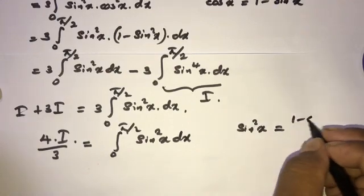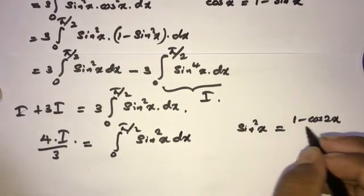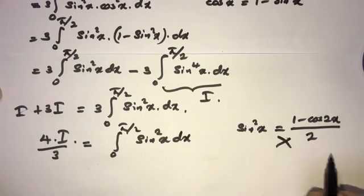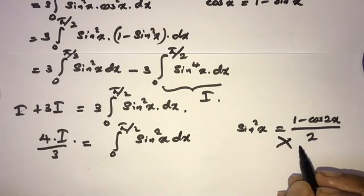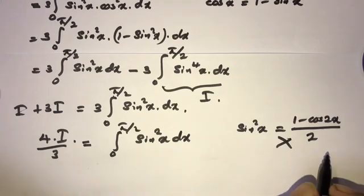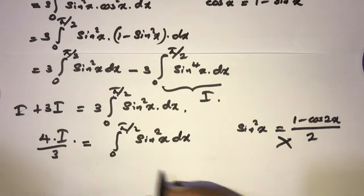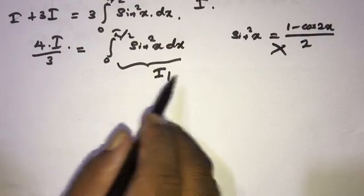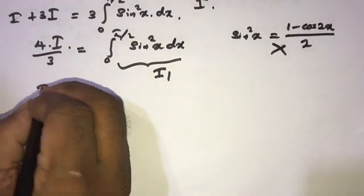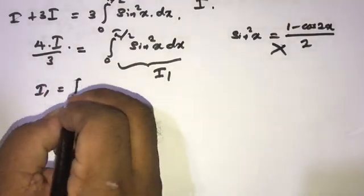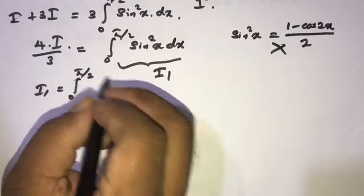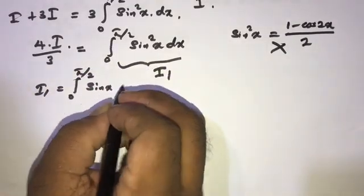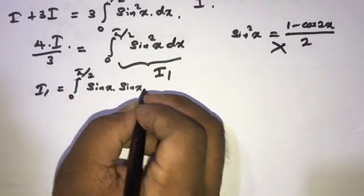Now we know sine squared x equals (1 − cosine 2x)/2, but we can't use this because we can't use the power reducing formula. So we are going to call this integral I₁. We want to evaluate I₁, so I₁ is equal to the integral from 0 to 5π/2.